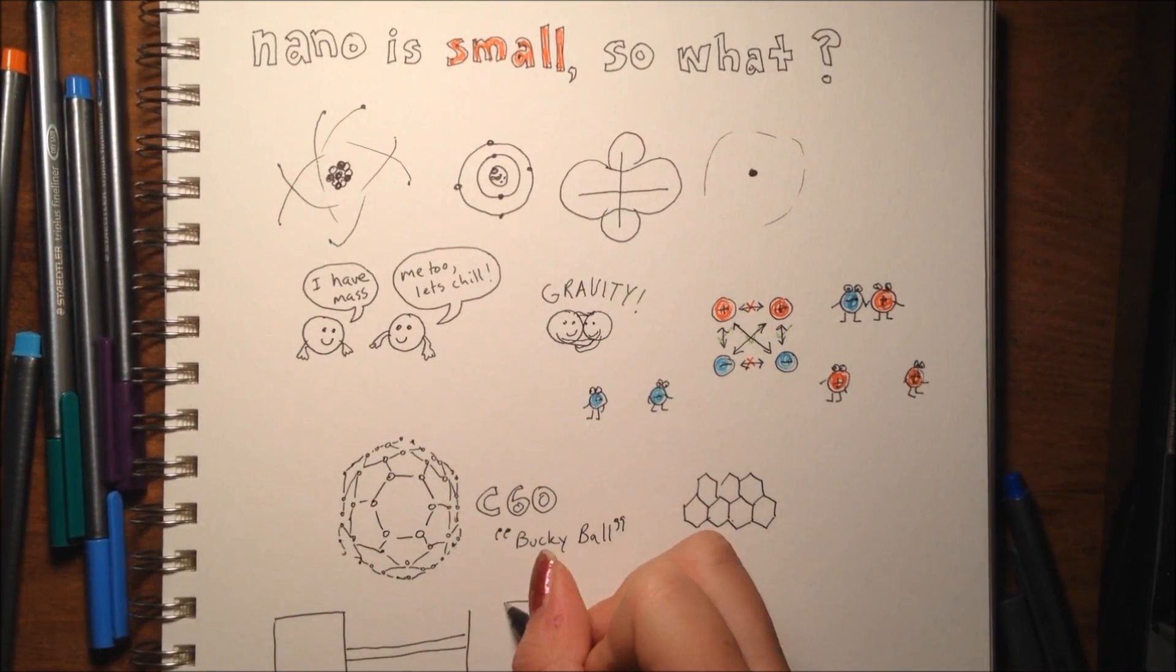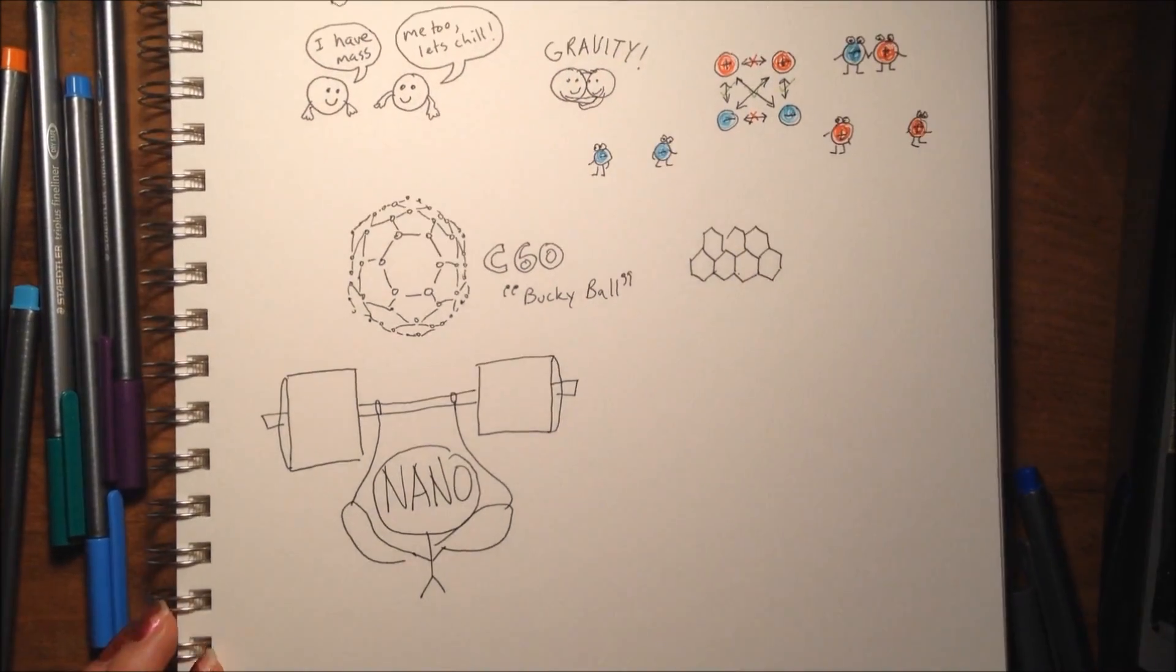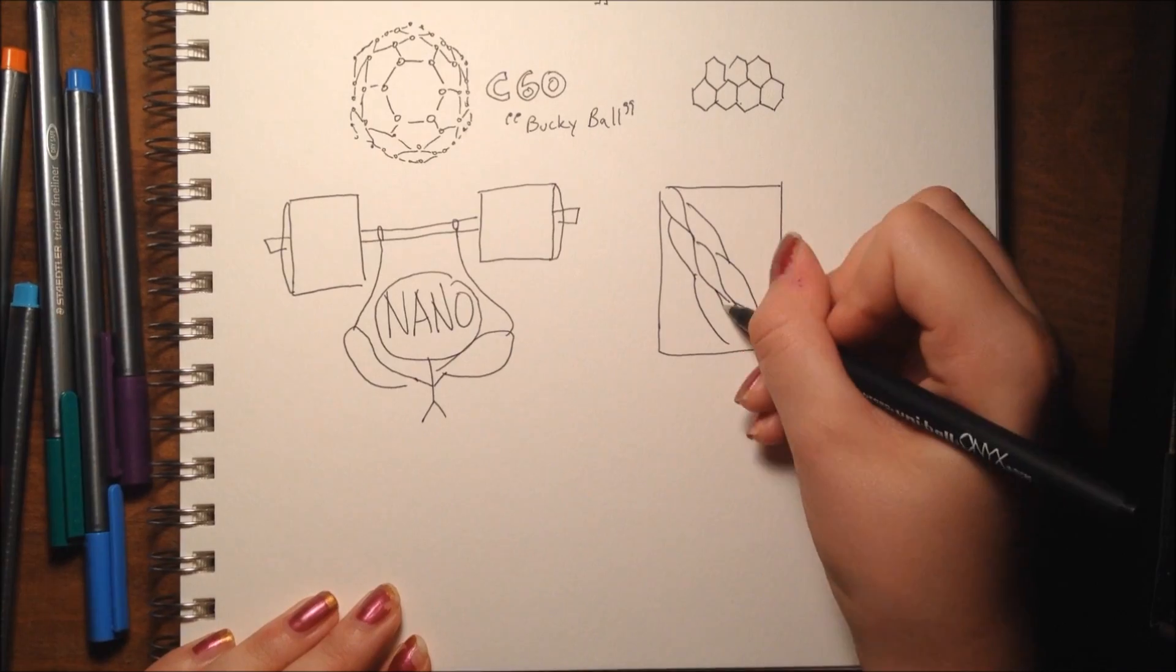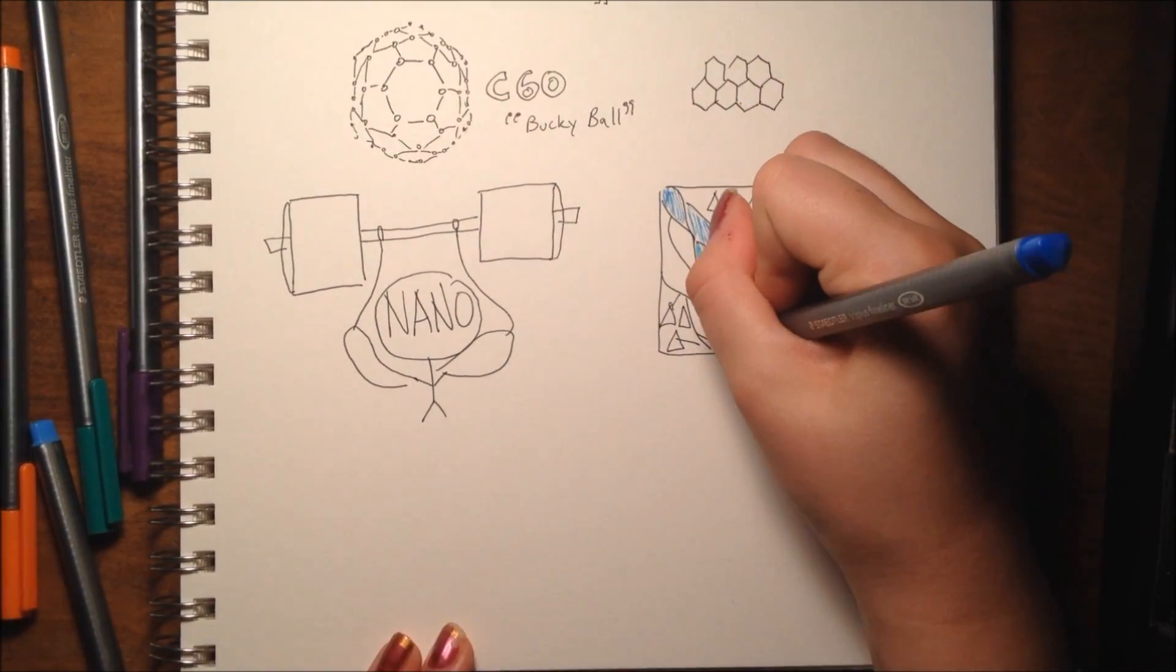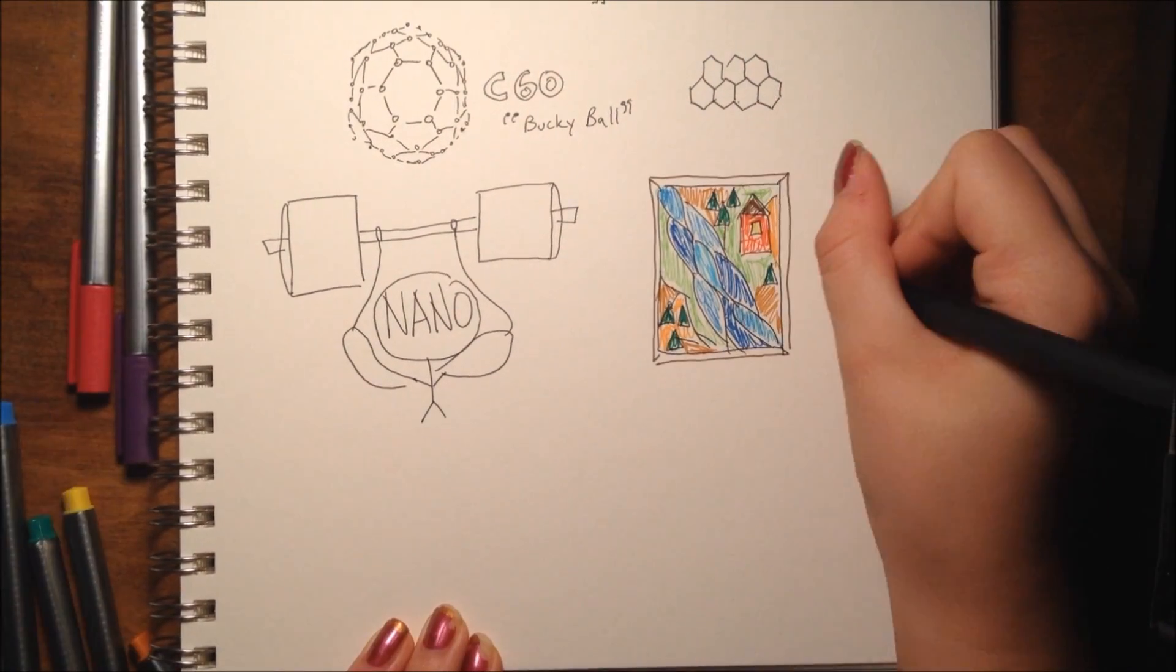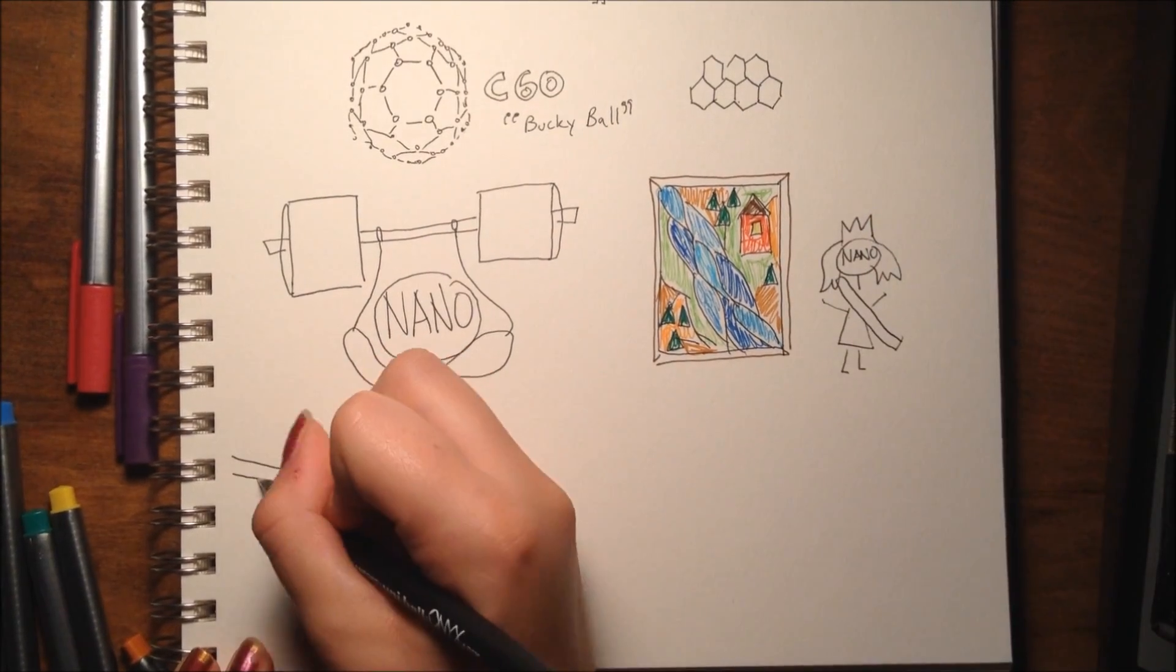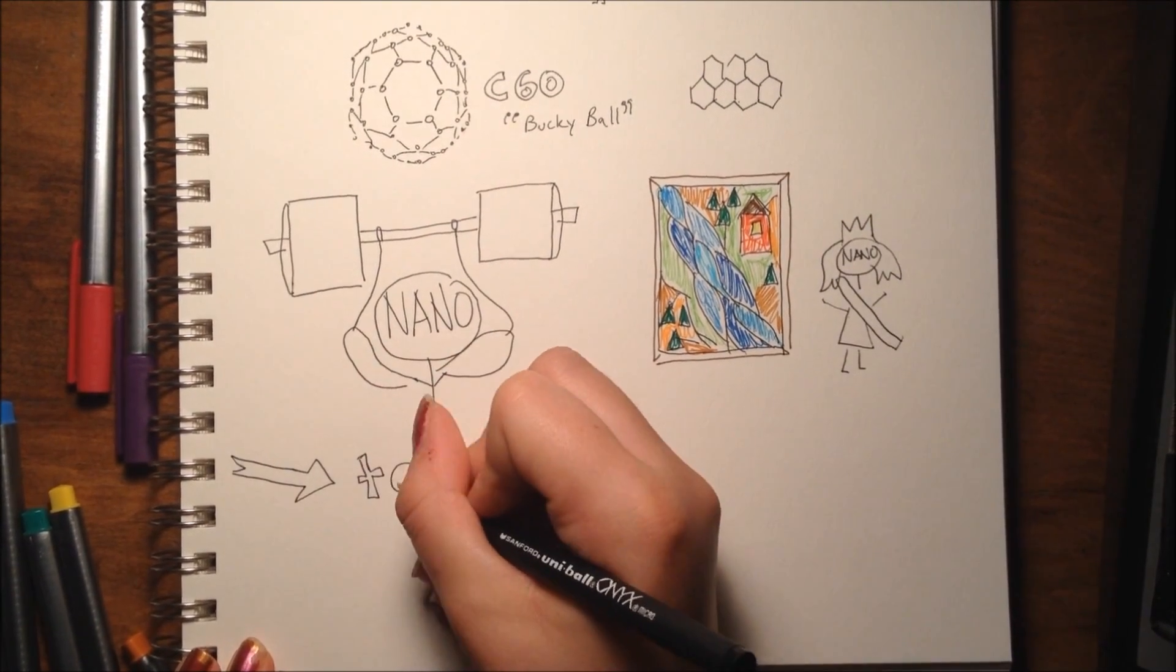Stained glass, which has been around for a long time, also uses nanotechnology, although people didn't realize at the time they started creating it. In fact, stained glass is one of the first examples of real nanotechnology.